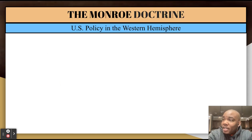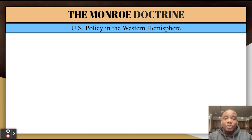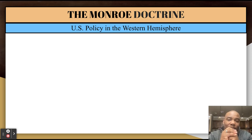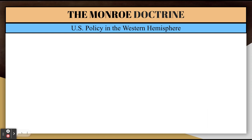Moving on to more foreign policy — not just making treaties or agreements over land, but something bigger. President James Monroe put forth something called the Monroe Doctrine. What is a doctrine? A doctrine is a particular principle, position, or policy taught or advocated by a religion or government. The Monroe Doctrine means the position that the Monroe administration is going to take toward foreign nations — a policy statement about how we're going to deal with foreign nations.